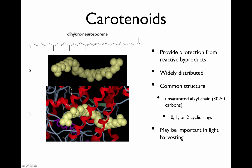Here is one dihydroneurosporine that is present in a protein — this is how it looks in a protein context. These carotenoids provide protection from reactive byproducts and are widely distributed. They have a common structure with a number of double bonds, and can have cyclic rings at the end or not. They are also important in light harvesting.